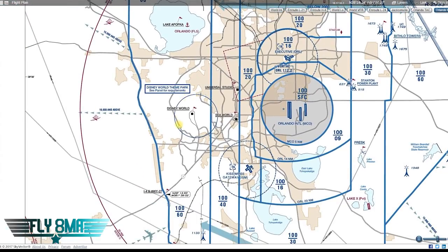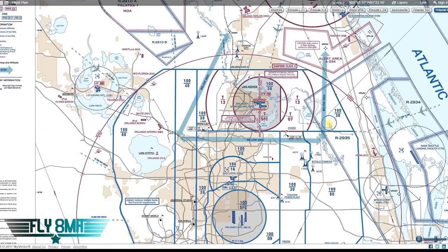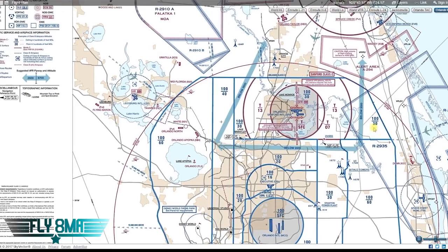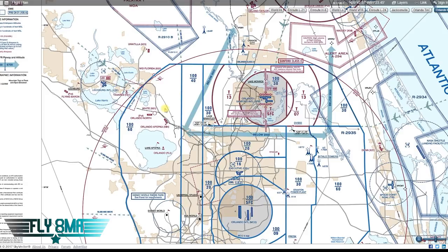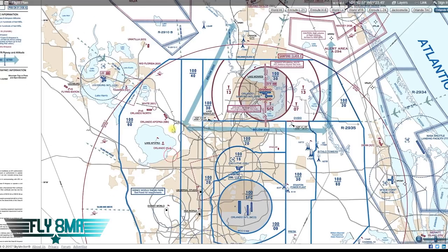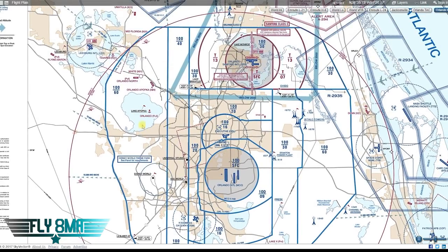It has some special information — obviously we all know about Disney World and that ring around it. That's because there's a TFR always active around Disney World. One unique thing on the flyway chart you don't see on the sectional is the suggested VFR flyway with altitude. You can be at any altitude when VFR — below 2,000 feet in this area, below 4,000 feet here, below 6,000 feet there.